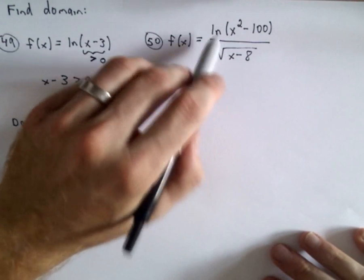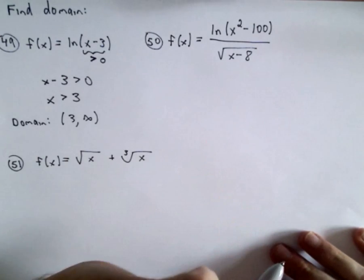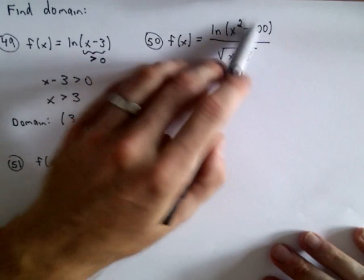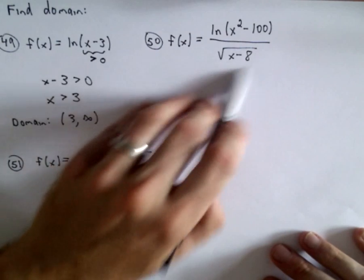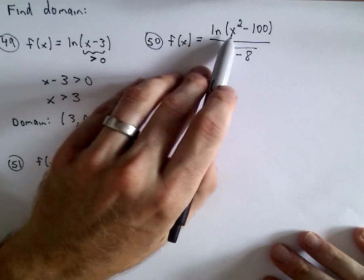Okay, 50 is a little bit more complicated because I see sort of two issues going on. I see this logarithm in the numerator. There's definitely going to be restrictions there. And I also see this radical in the denominator, so I know there's going to be restrictions there. So let's take it in the same order as before.